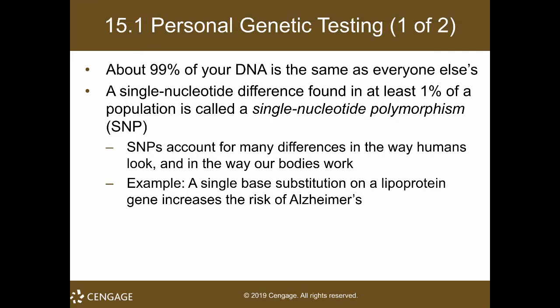As an introduction, did you know that 99% of your DNA is the same as everyone else? If 99% is exactly the same as everyone else, how do we use DNA to identify, for example, paternity testing? How do we identify a certain blood sample from a crime scene as belonging to a certain person? That way of identification is through what you call the single nucleotide polymorphism.